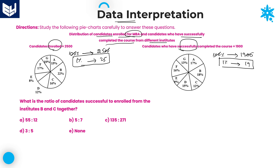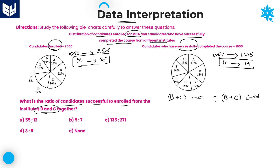Let's see the first question: What is the ratio of candidates successful to enrolled from institutes B and C together? We need to calculate B plus C successful, to B plus C enrolled. That is the ratio we need to calculate.